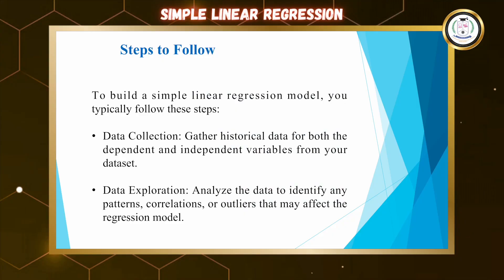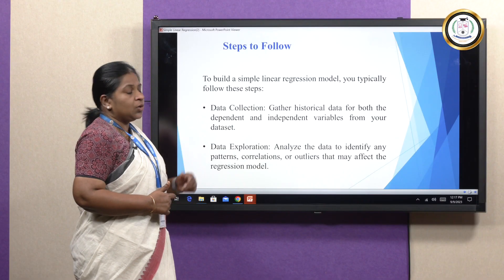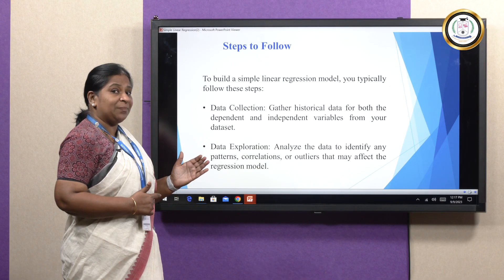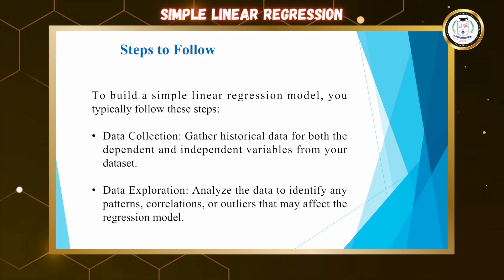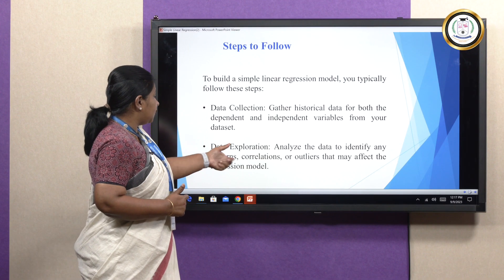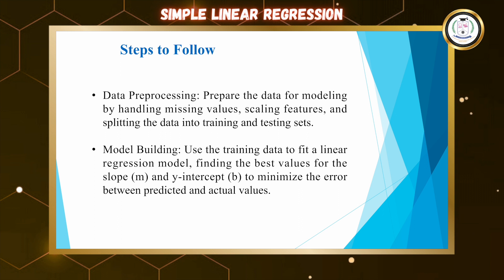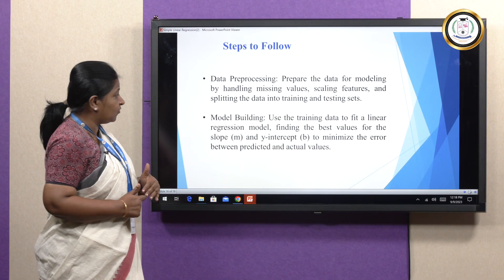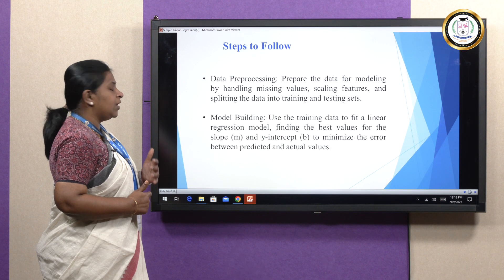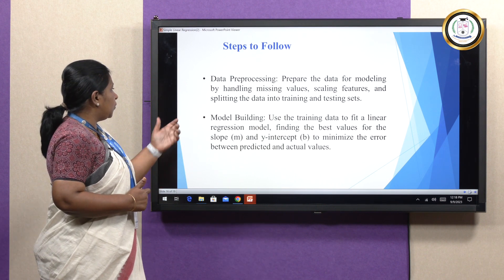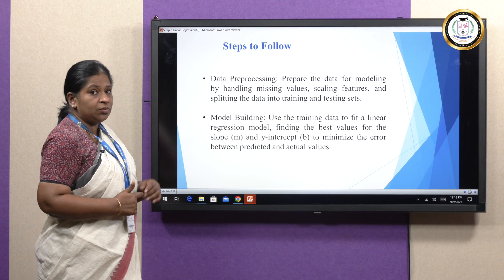The steps to implement simple linear regression are as follows. The first step is data collection, where we gather historical data for both dependent and independent variables from the dataset. The second step is data exploration, where we analyze the data to identify patterns, correlations, outliers, or missing data so they do not affect the model. The third step is data pre-processing, where we clean the data, fill missing values, scale features, and split the dataset into training and testing sets.